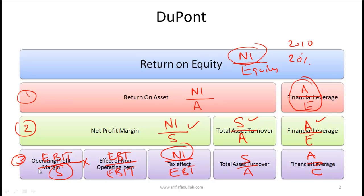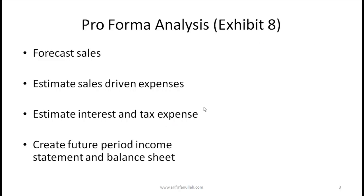The most complex form is the five-level DuPont, but the most likely exam questions will be on either the first or second level. Now let's talk about pro forma analysis and pro forma financial statements, which ties to Exhibit 8 in the 2011 curriculum. Pro forma analysis here refers to creating financial statements — specifically the income statement and balance sheet — for future periods.